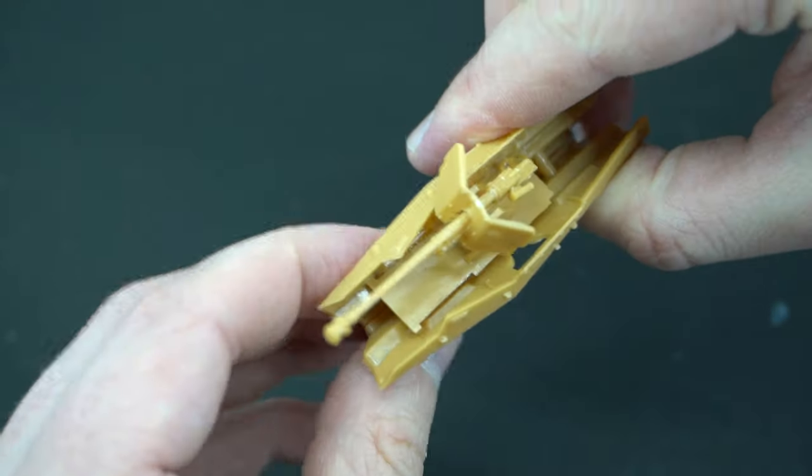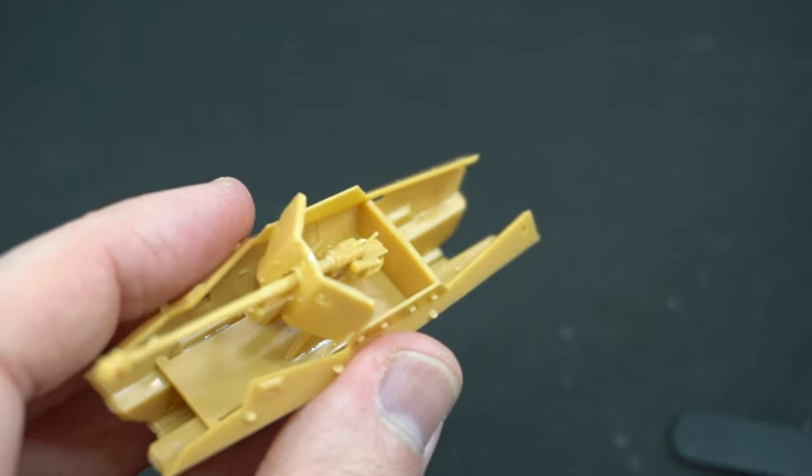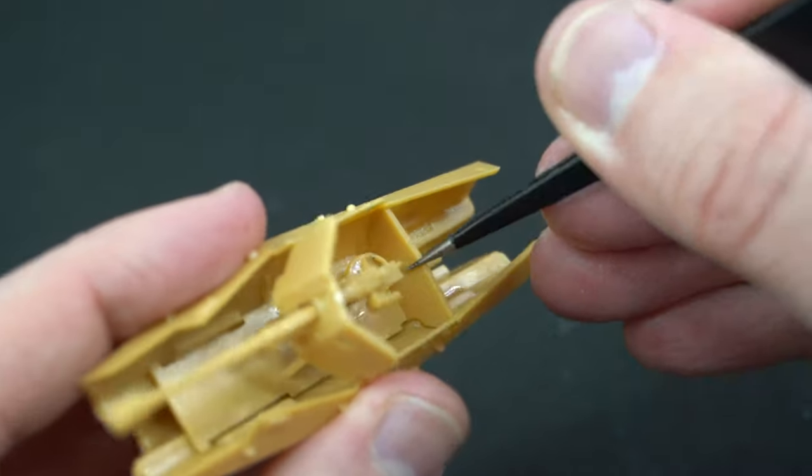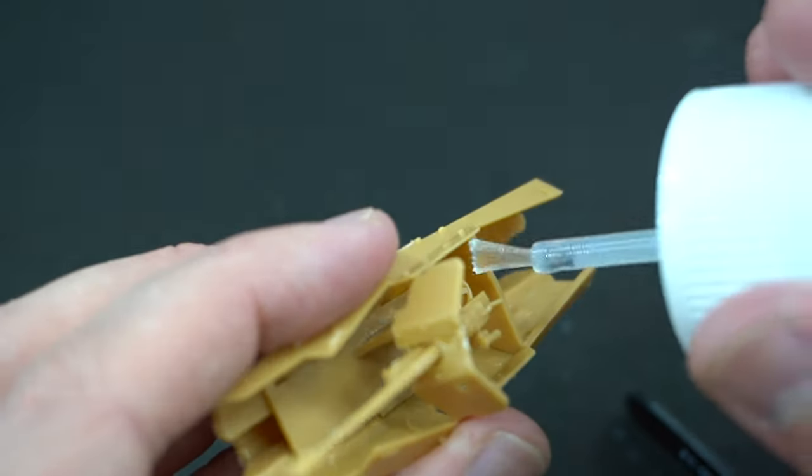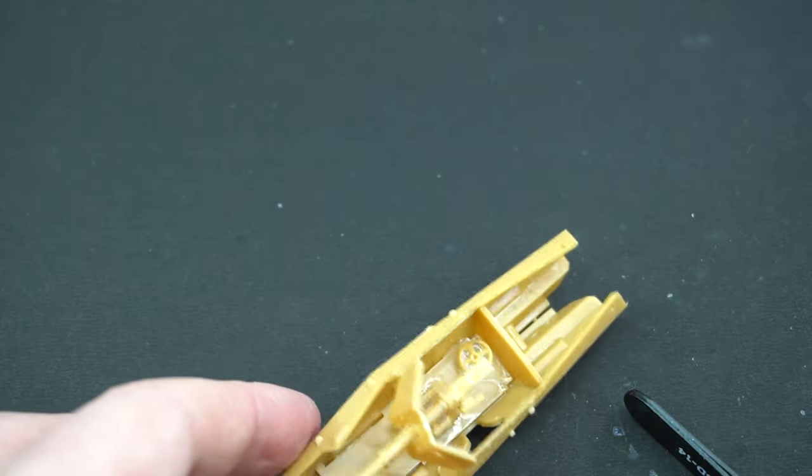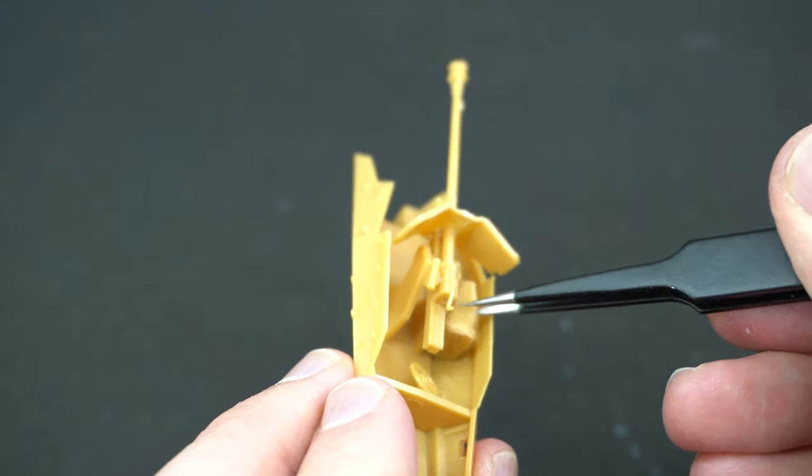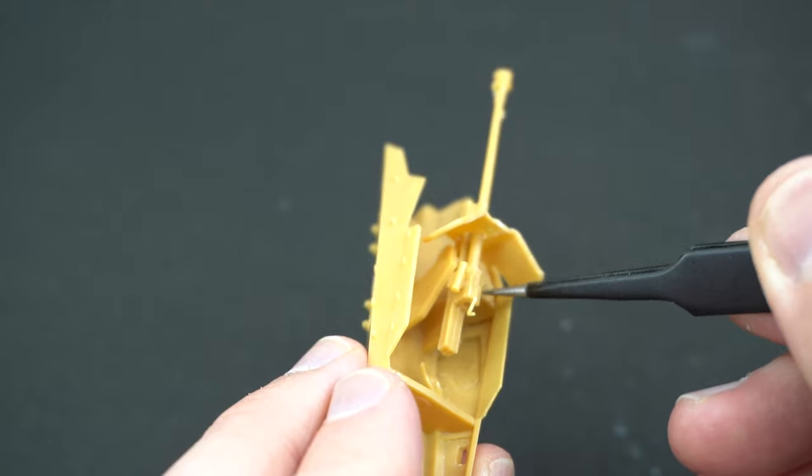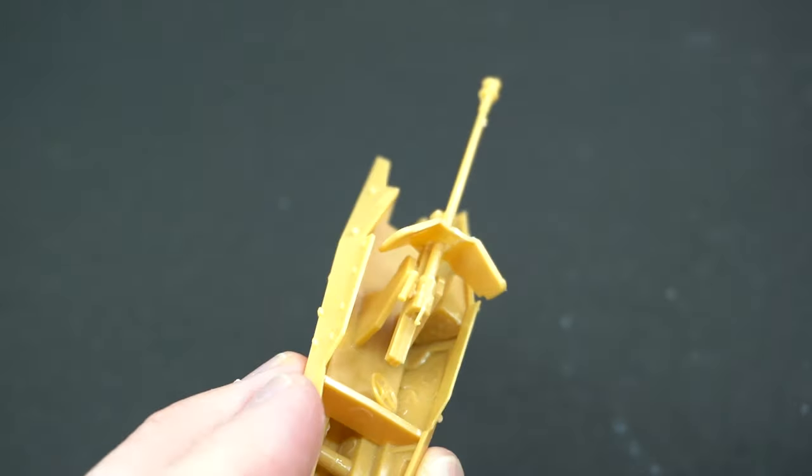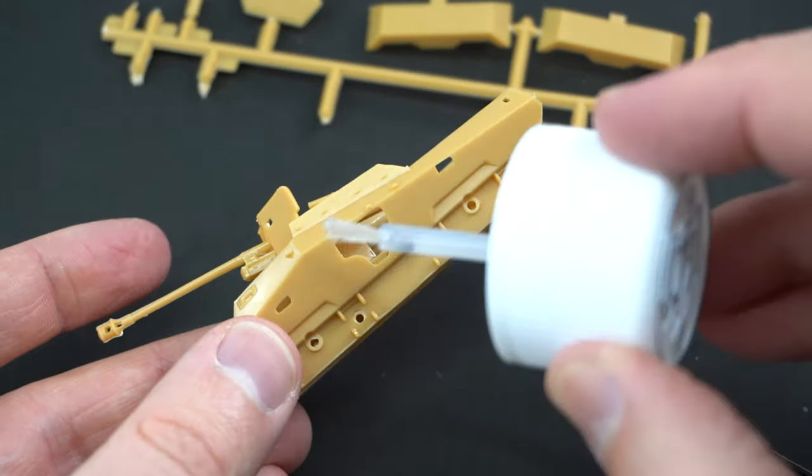I then went and added the rear bulkhead and it was much easier to do it at this step than the previous step as indicated in the instructions because it just manages to slot into the right place. Moving on from this, I can install what I'm pretty sure is the ammo storage bins on the right hand side of the vehicle.